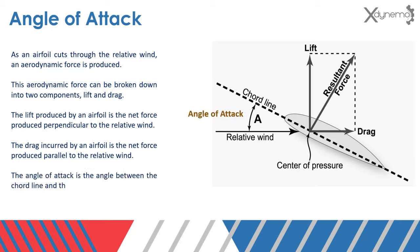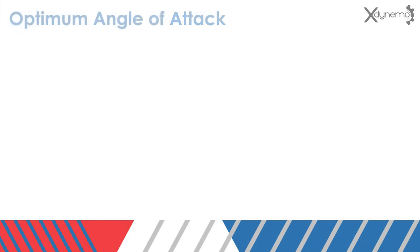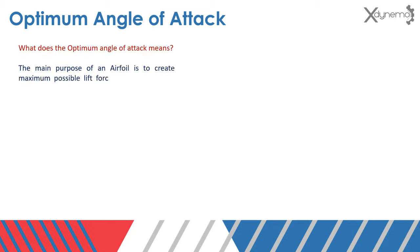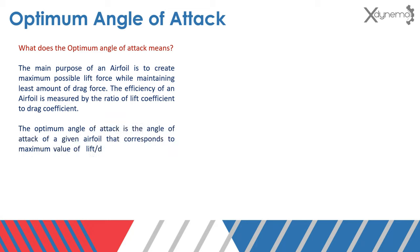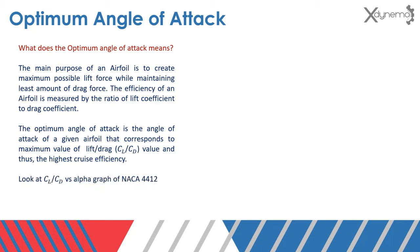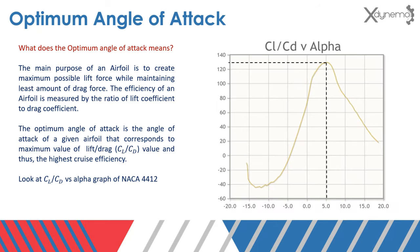The angle of attack is the angle between the cord line and the relative wind. Optimum angle of attack — the main purpose of an airfoil is to create the maximum possible lift force while maintaining the least amount of drag force. The efficiency of an airfoil is measured by the ratio of lift coefficient to drag coefficient, CL/CD. The optimum angle of attack is the angle that corresponds to the maximum value of CL/CD, and thus the highest cruise efficiency. Looking at the CL/CD versus alpha graph of NACA 4412 airfoil, the maximum value of CL/CD occurs at 5 degrees. The optimum angle of attack is 5 degrees.